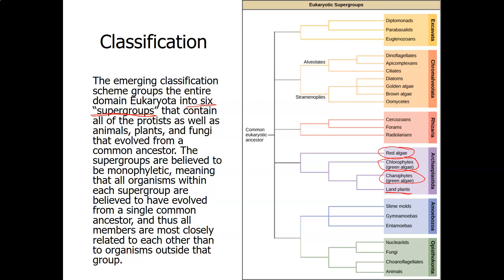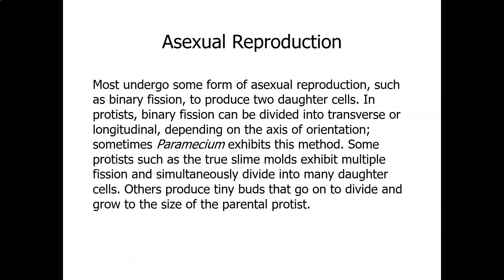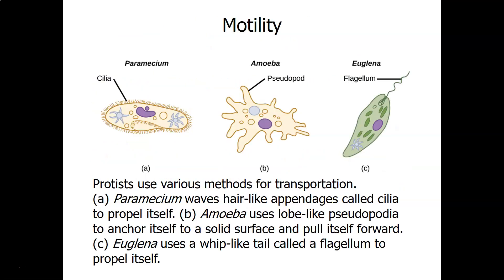Going up to the top, the supergroup Excavata only contains protists: the diplomonads, the parabasalids, and the euglenozoans — all from the Kingdom Protista. Same thing with the supergroup Chromalveolata, which is divided into subgroups. The alveolates include dinoflagellates, apicomplexans, and the ciliates. The paramecium we looked at earlier is a ciliate because it is covered with cilia.